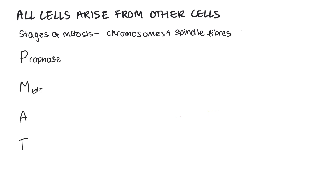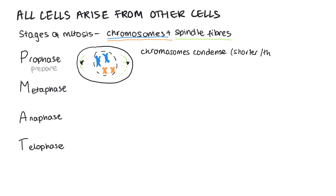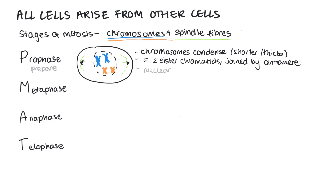In prophase, we can think of the P standing for PREPARE. During prophase, the chromosomes are going to condense, becoming shorter and thicker, which means that they appear as two sister chromatids joined by a centromere. The nuclear envelope will also start to break down and the centrioles will move to opposite poles, forming the spindle network.